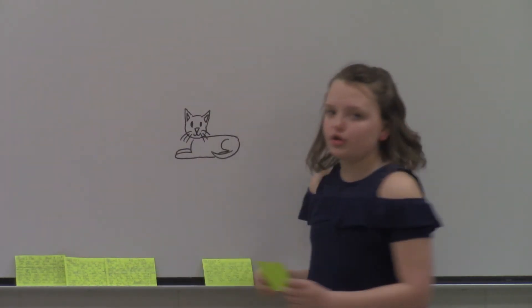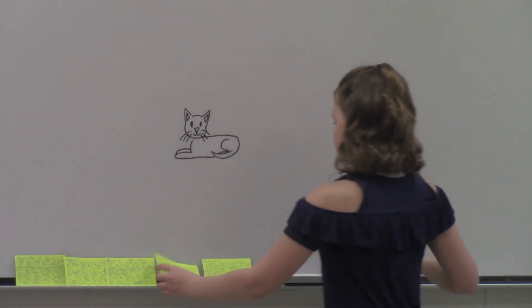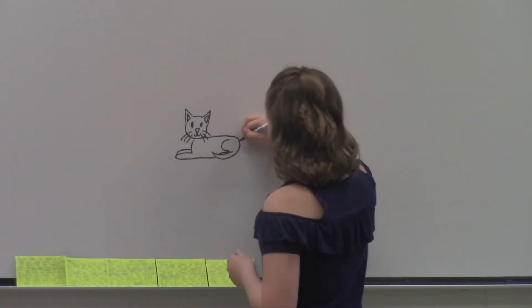And then, now all you have to do is add the stripes. You just have to draw squiggly lines on the cat, and form them.